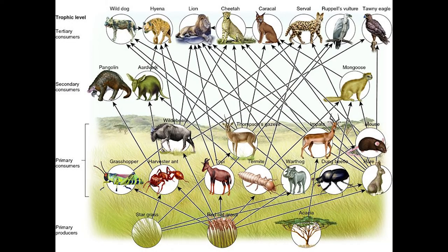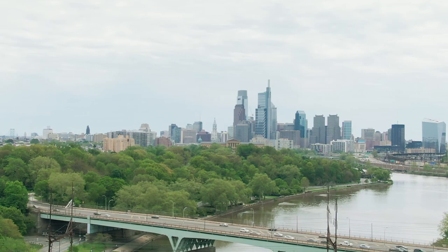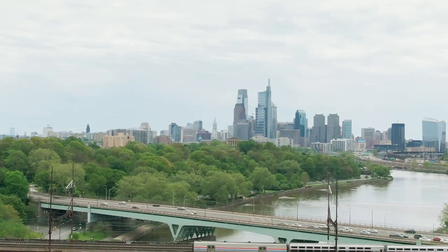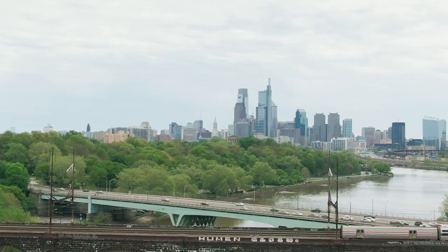Food webs look different depending on the ecosystem, but they all follow the same basic principles. There's always a primary producer at the start, which is then followed by a herbivore, a few levels of carnivores, and then the decomposers at the end. I hope you guys have a better understanding of what an ecosystem is after watching this. Next episode I'll be going more in depth about animal habitats. Thanks for tuning in, and see you next episode.